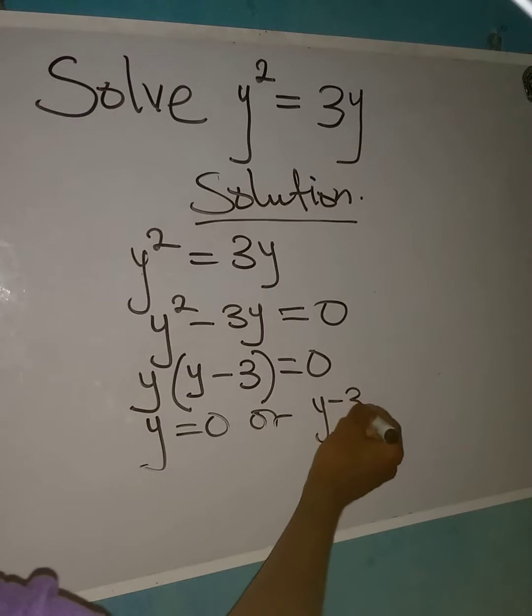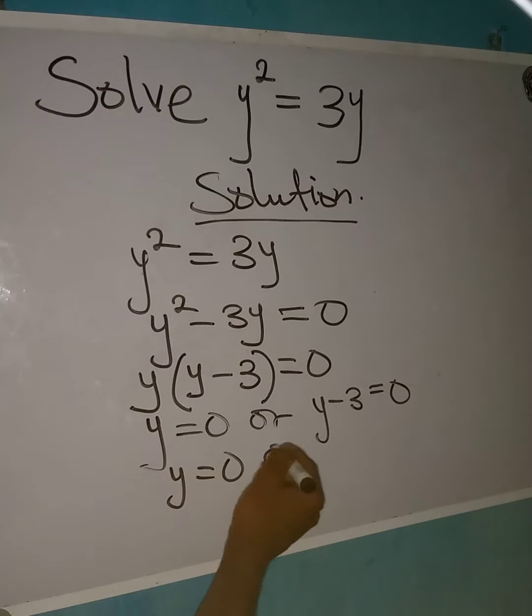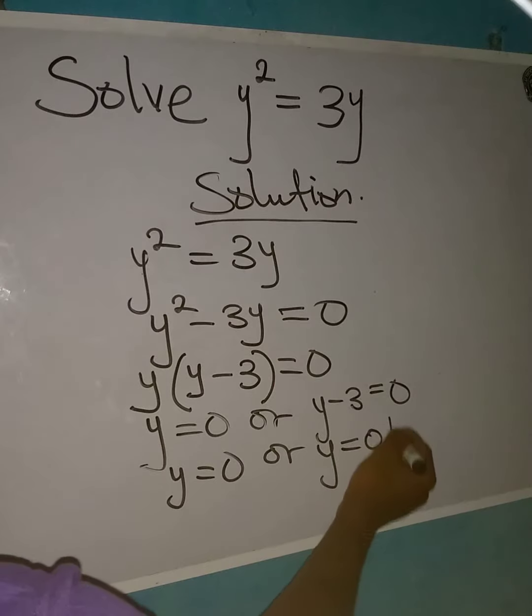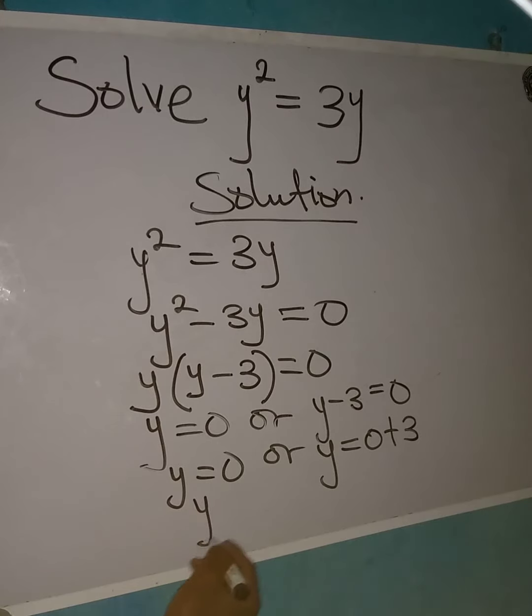If this is the case, y remains 0. Or on this side, y will be equal to 0 plus 3, because minus 3 goes there to become plus 3. So therefore y remains 0 or plus 3.